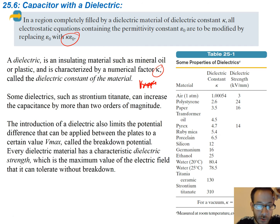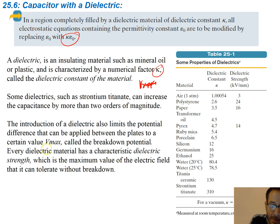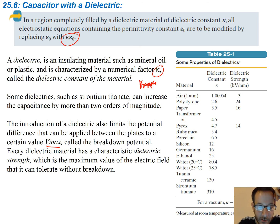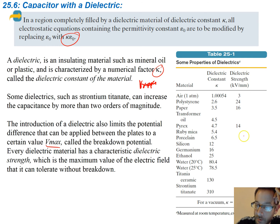The introduction of a dielectric also limits the potential difference that can be applied between the plates to a certain value, Vmax — this is called the breakdown potential. Every dielectric material has a characteristic dielectric strength, which is the maximum value of the electric field it can tolerate without breakdown. The chart also shows the dielectric strength, measured in kilovolts divided by millimeters.